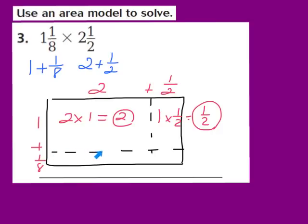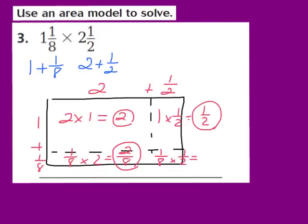Now we find the area of the next section by multiplying the fraction 1/8 by the whole number 2. 2 times 1 gives me 2 as my numerator, and 8 is my denominator, so 1/8 times 2 gives me 2/8. For the last section, we multiply 1/8 times 1/2. Numerator times numerator: 1 times 1 gives us 1. Denominator times denominator: 8 times 2 gives us 16. So the area of the last section is 1/16.